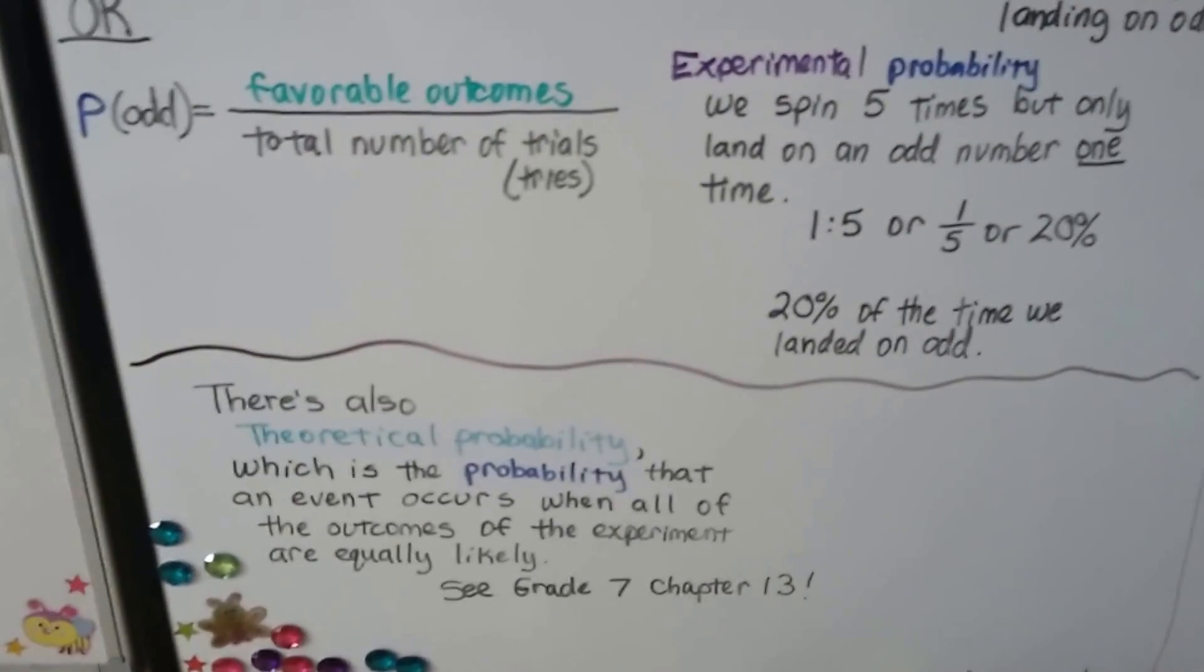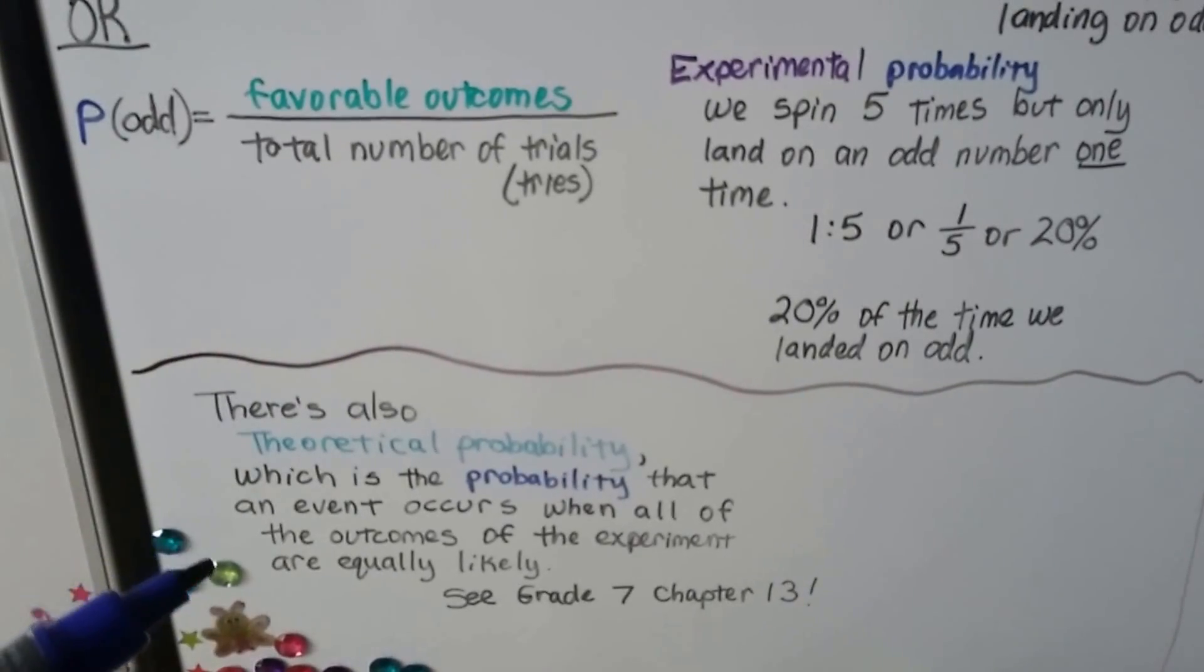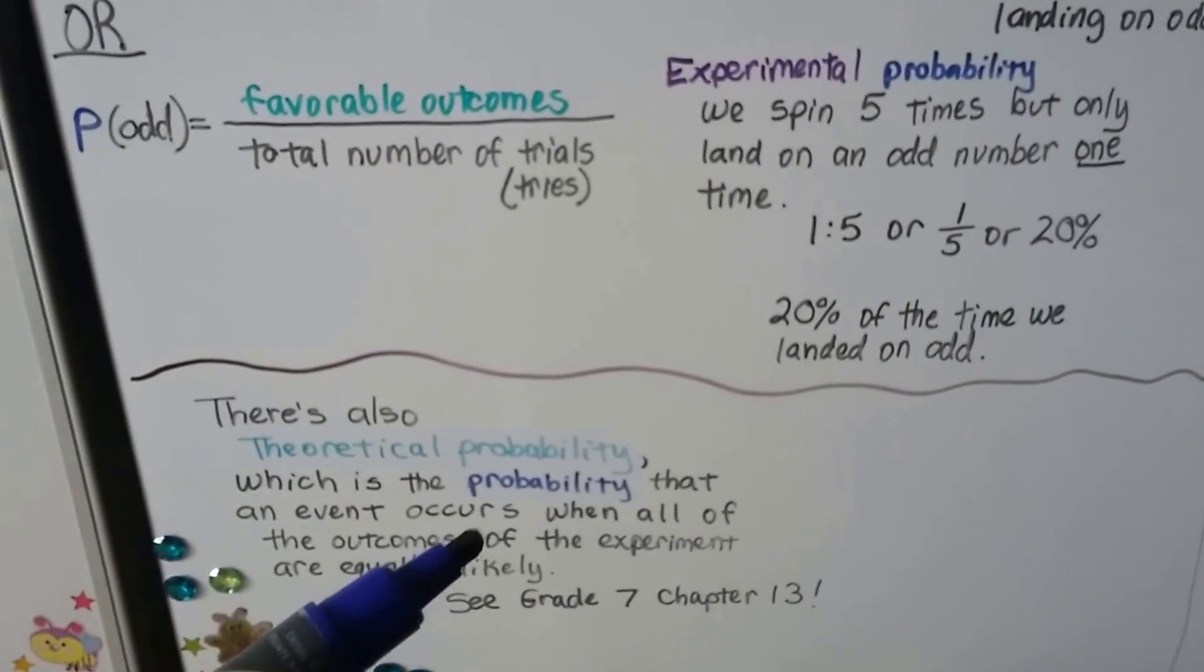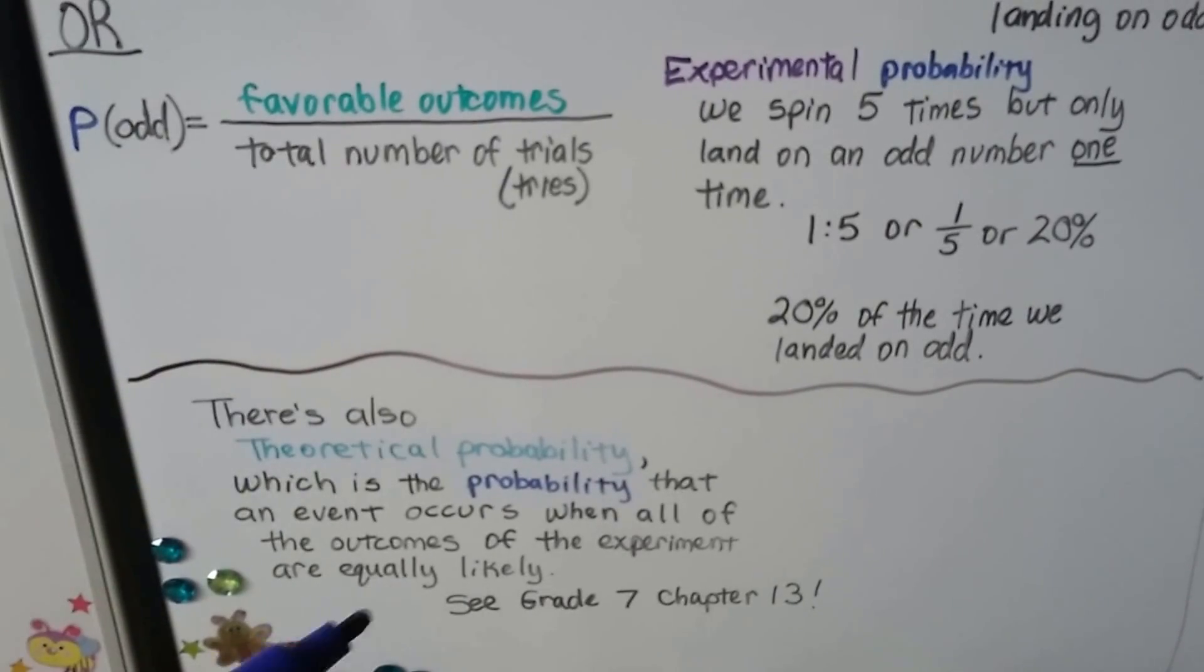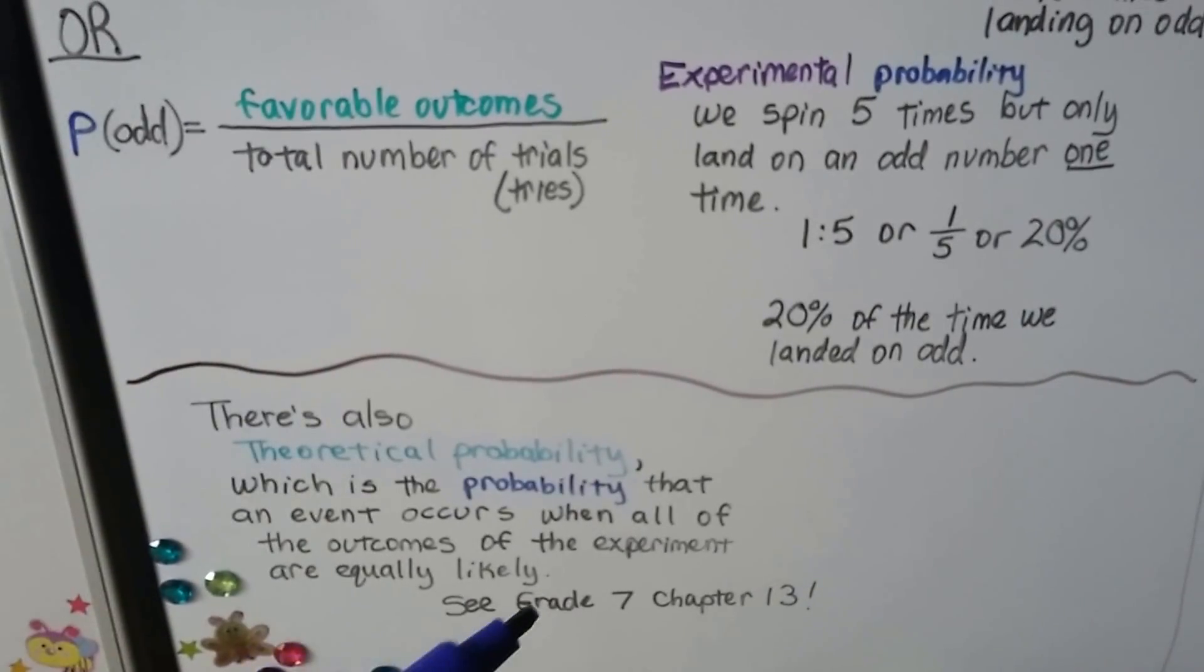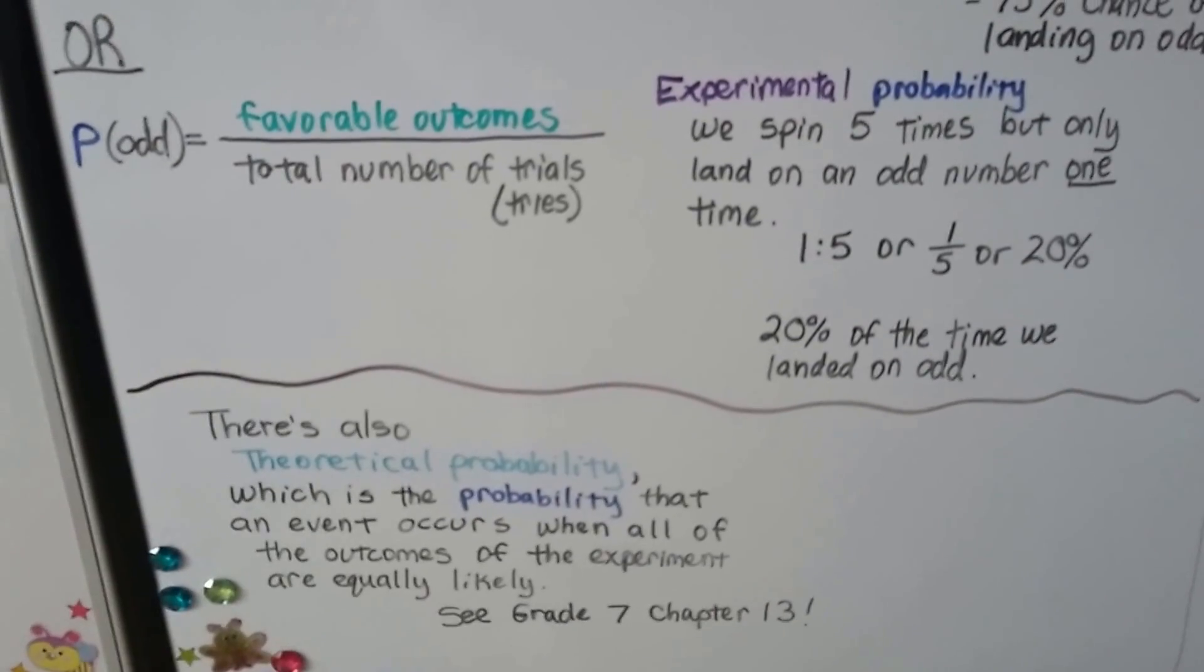Now, there's also theoretical probability. And theoretical probability is the probability that an event occurs when all the outcomes of the experiment are equally likely. And we covered that in Grade 7 Math, Chapter 13.